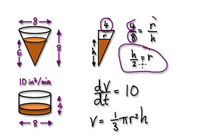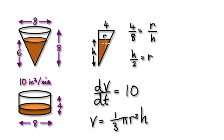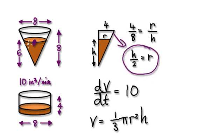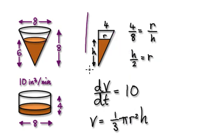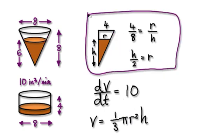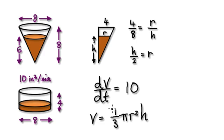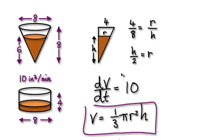So r equals h over 2. When the volume of the coffee is falling, it has to obey this because it's in this container. So we can put this into the r. We're going to kill off the r by putting this substitution in. We don't really need the r here. From here, we would use implicit differentiation.